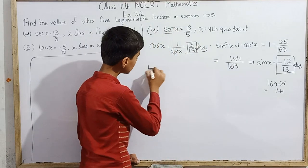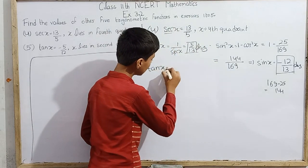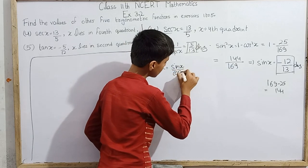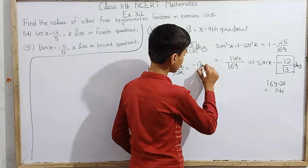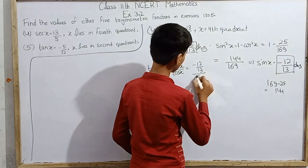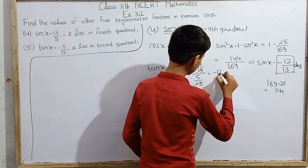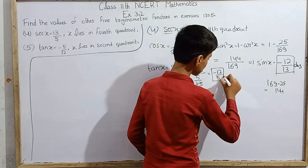Now for tan x, we know tan x equals sin x over cos x, which is minus 12 over 13 divided by 5 over 13. The 13s cancel, giving us minus 12 over 5. This is our answer.